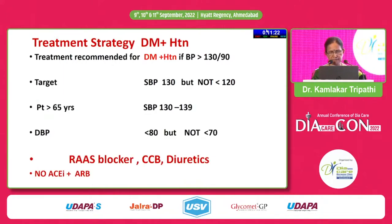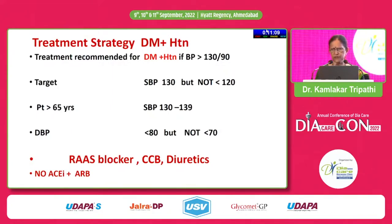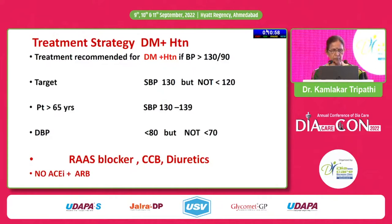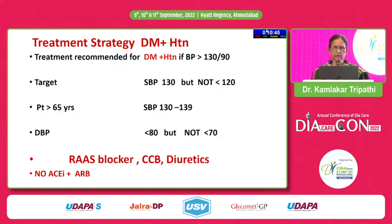For treatment strategy in diabetes and hypertension: if BP is more than 140/90, treatment is indicated. The target systolic BP should be 130, but not less than 120 — we should not be too aggressive. If the patient is more than 65 years, systolic BP should be 130–139. Diastolic BP should be less than 80 but should not be brought below 70. We can use RAS blockers, calcium channel blockers, and diuretics, but ACE inhibitors and ARBs should not be combined together.